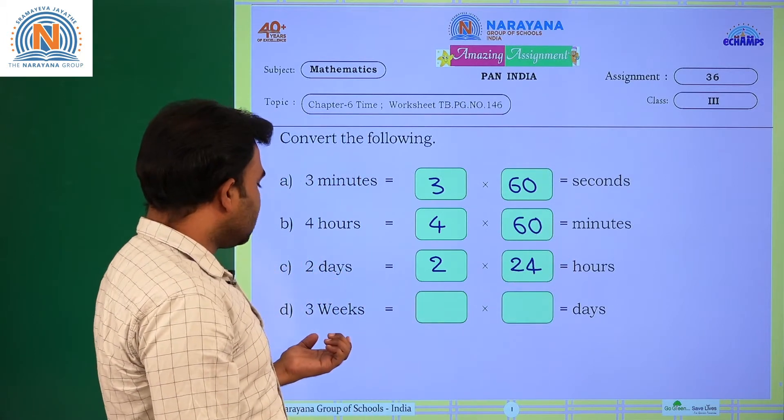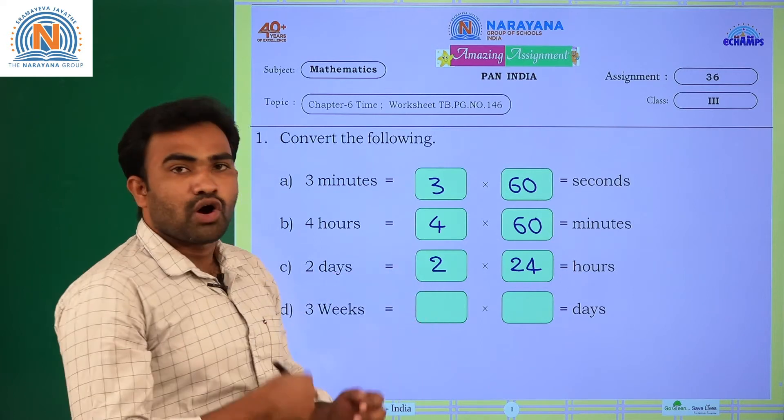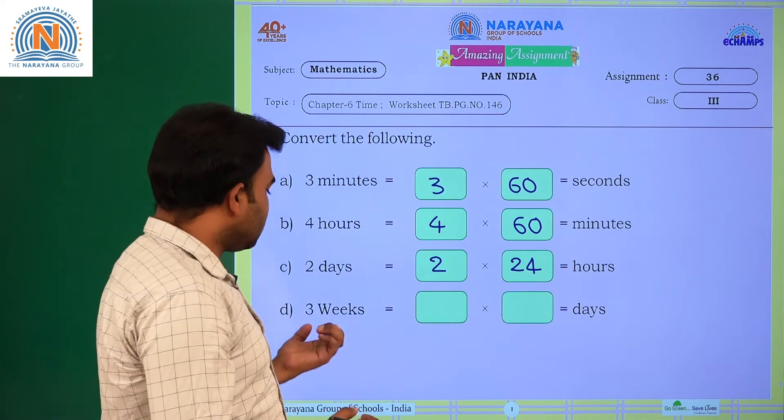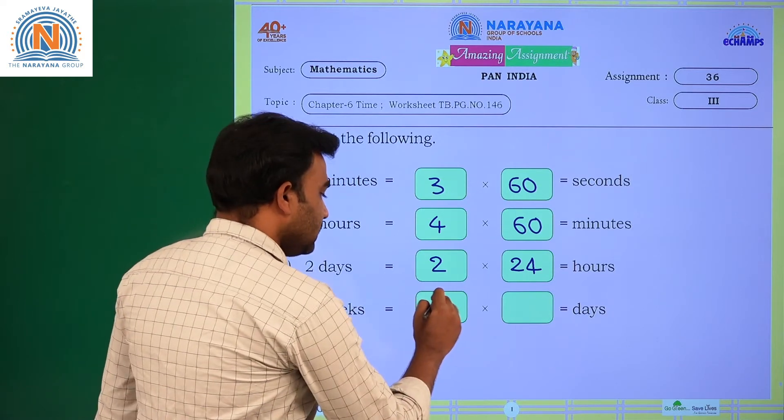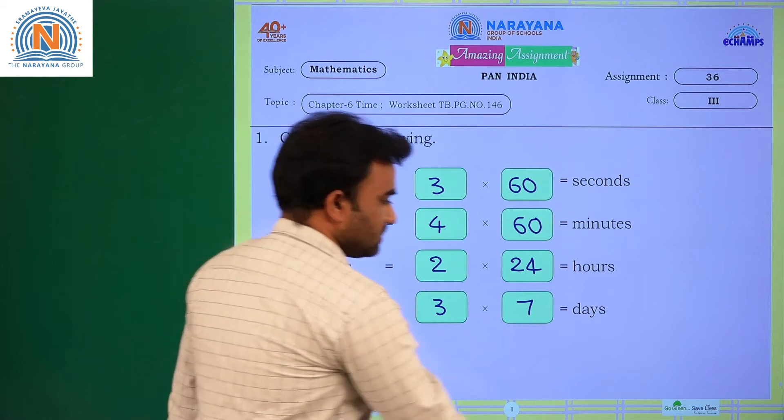Next one, 3 weeks into days. One week equals how many days? 7 days. Then 3 weeks equals 3 into 7. That is it.